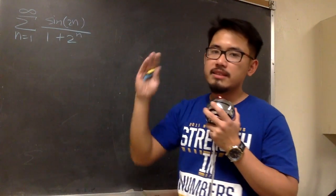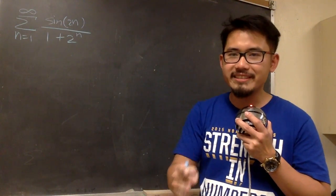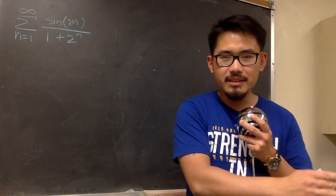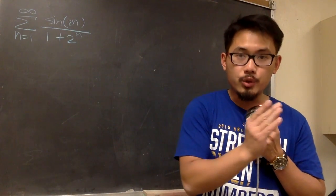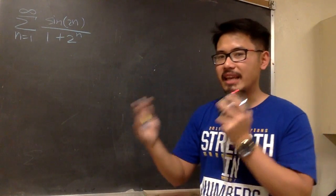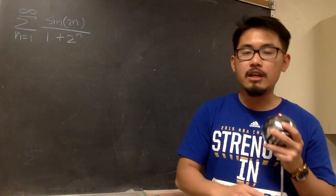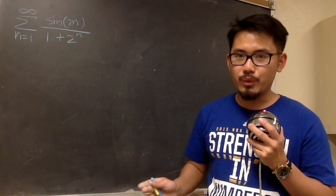On the numerator, we get sine of 2, sine of 4, sine of 6, sine of 8, and so on. Those numbers are measured in radians, and sometimes they are negative, sometimes they are positive. I don't know if it's alternating or not.